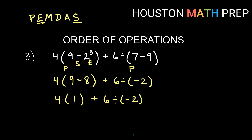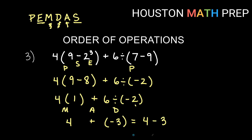Everything in parentheses is now simplified. We have four times one plus six divided by negative two. No exponents remain, so we do multiply and divide before add. Four times one is four, and six divided by negative two — a positive divided by a negative is negative, and six divided by two is three — so that's negative three. Now we have four plus negative three. Plus a negative is the same as subtract, so four minus three gives us one.